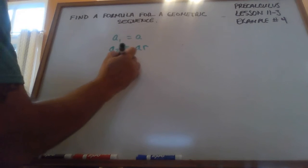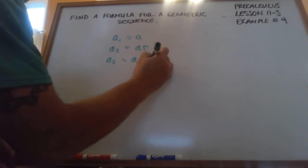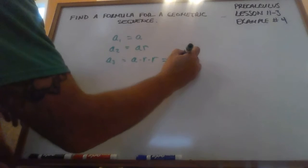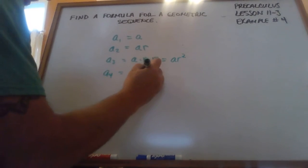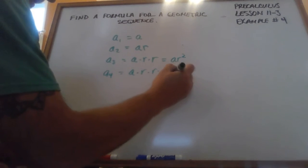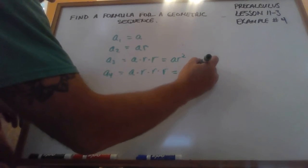The third term is a times r times r, which is ar squared. The fourth term is a times r times r times r, which is a times r to the third power,